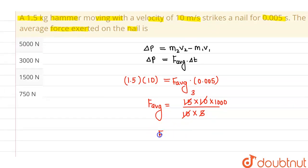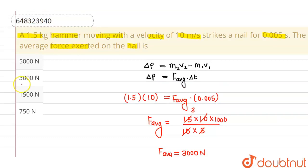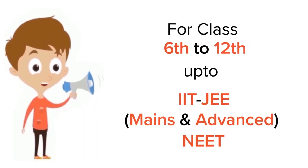I will be having the average force as 3000 newtons. This is our answer. So the correct option is option 2 and all other options are incorrect. I hope you understood. Thank you.